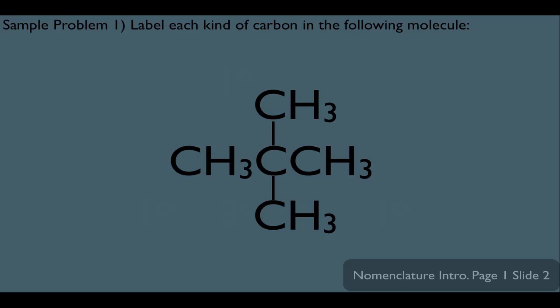So our labeling here is, let's start with this carbon. We would notice that he only has this carbon directly connected to him. That would make him a primary carbon. And notice that's true for these carbons right here as well. They all have that central carbon directly connected to them. So all of these would be primary carbons as well.